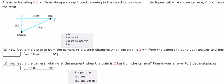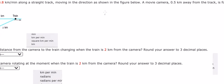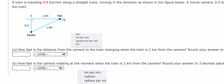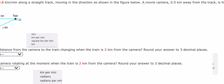A train is traveling 0.8 km per minute along a train track moving in the direction as shown in the figure below. Here is the figure of a moving camera 0.5 km away from the track.